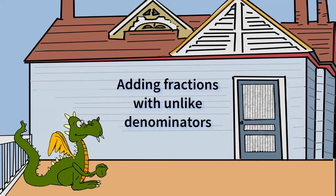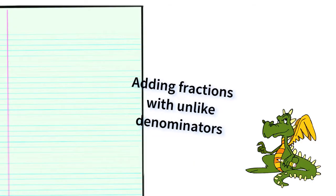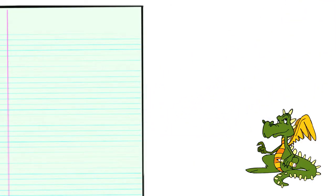Adding fractions with unlike denominators. Let's look at two examples. We will start with the problem 3 8ths plus 1 4th.